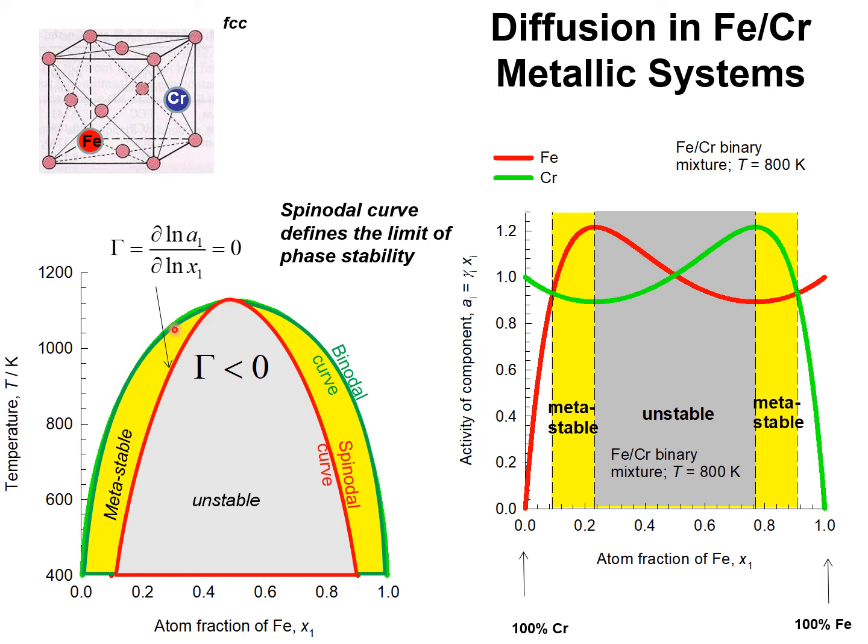The green line shows the binodal curve and the red line shows the spinodal curve. Along the spinodal curve, the thermodynamic correction factor is zero. And for the region indicated in gray, the thermodynamic correction factor is negative. It also suggests that the Fick diffusivity is negative in this region. That would lead to uphill diffusion.